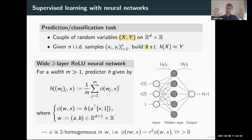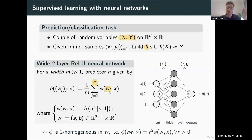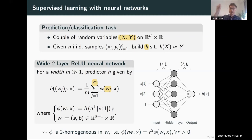Two-layer neural networks are a specific class of models — vanilla two-layer neural networks — which have a specific structure that can be written as a sum of m simple functions, where m is the width of the hidden layer. Each simple function phi takes the input x and some parameters w_j — the weights of the neurons corresponding to index j. For the rectified linear unit non-linearity, this simple function is the composition of an affine transformation of the input parameterized by a weight vector a in R^(d+1), then a non-linearity (the positive part), and then multiplication by a scalar b.